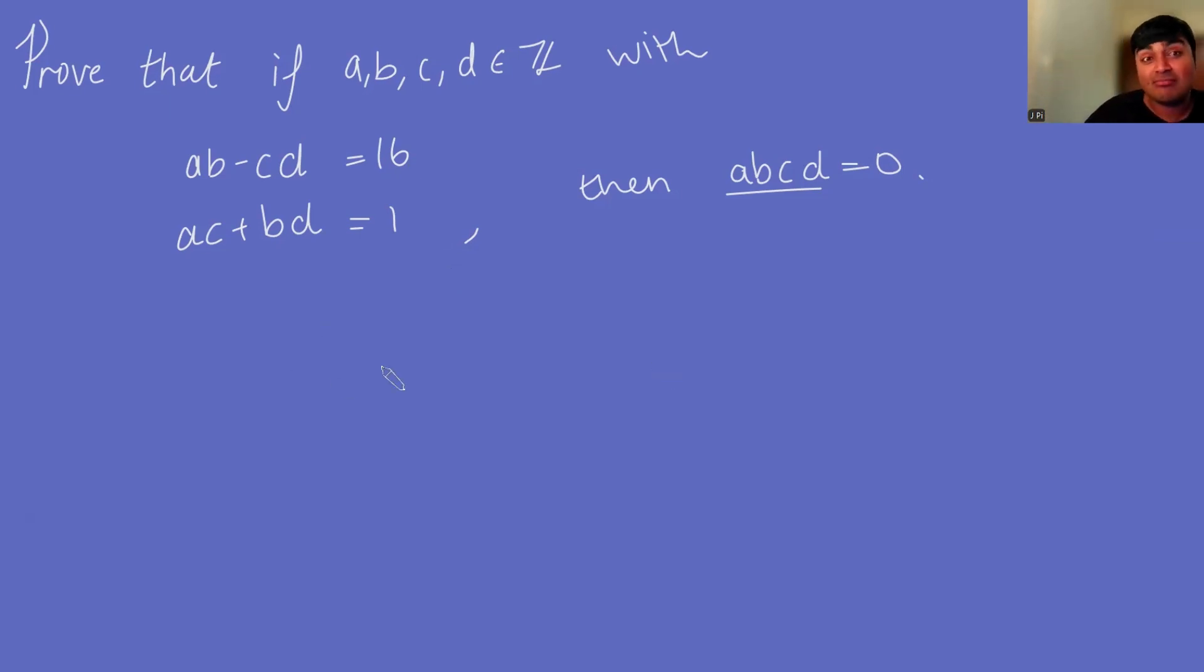All we're going to do is take these two equations and just square them. So if I take the first equation and square it, I get a squared b squared minus 2abcd plus c squared d squared equals 16 squared, which is 256. I'm going to do the same thing with the second equation. I'm going to square that, so I get a squared c squared plus 2abcd plus b squared d squared equals 1.